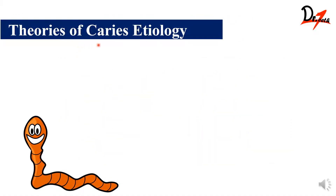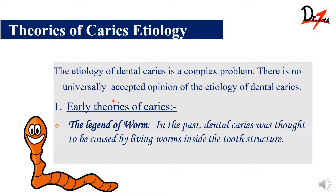Now let's see what are the theories of caries etiology. You should know that there are no universally accepted theories or etiologies for dental caries. But many have been proposed and some we still consider as the backbone. The first was the early theory: the legend of worm theory, which said that certain living worms inside the tooth structure were the ones causing dental caries.